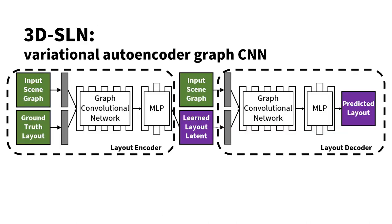Here is the architecture of our 3D SLN. It takes the form of a graph convolution-based variational autoencoder. During training, we feed in ground-truth bounding boxes and the corresponding scene graph. It learns a latent space modeled as a normal distribution, which we can then sample from to produce per-object bounding boxes. During test time, we can discard the encoder and simply use the decoder with a scene graph.